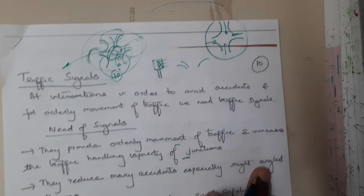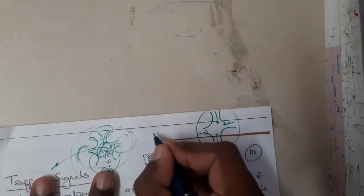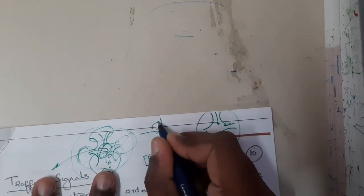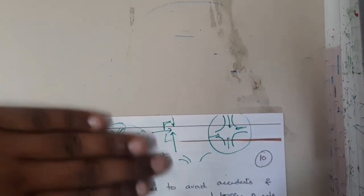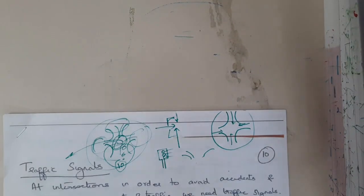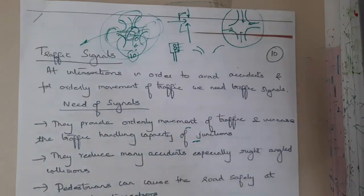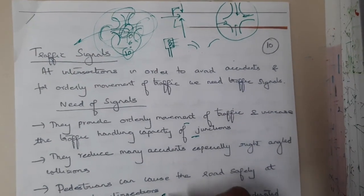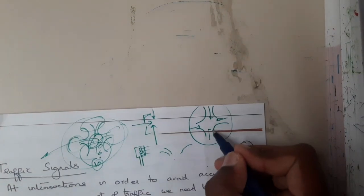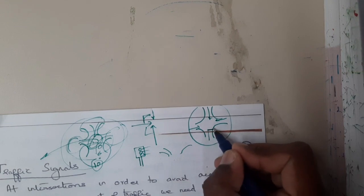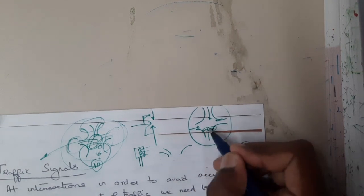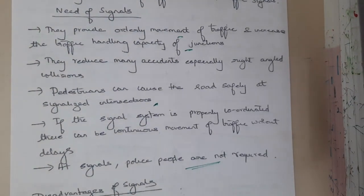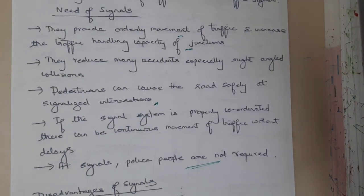Signals reduce many accidents, especially right-angle collisions — where someone coming from one lane hits someone from another lane at a 90-degree angle. Those kinds of collisions are avoided because we have signals. Pedestrians crossing from one side to another will also be safe, since once the signal turns red, someone who wants to cross can do so safely.